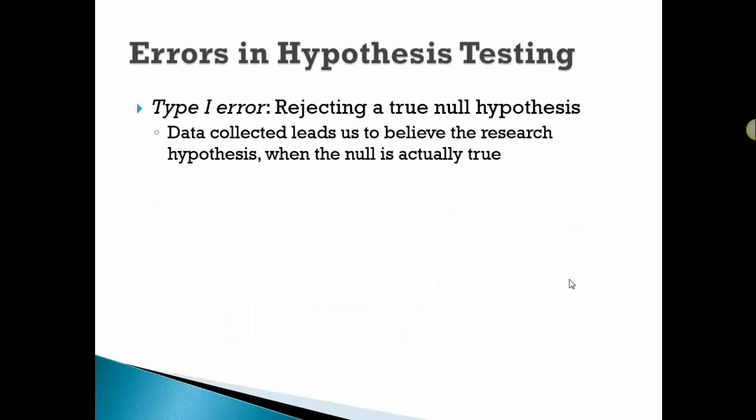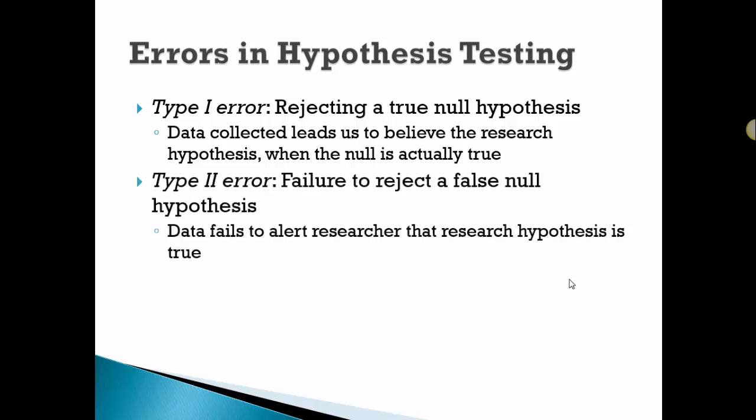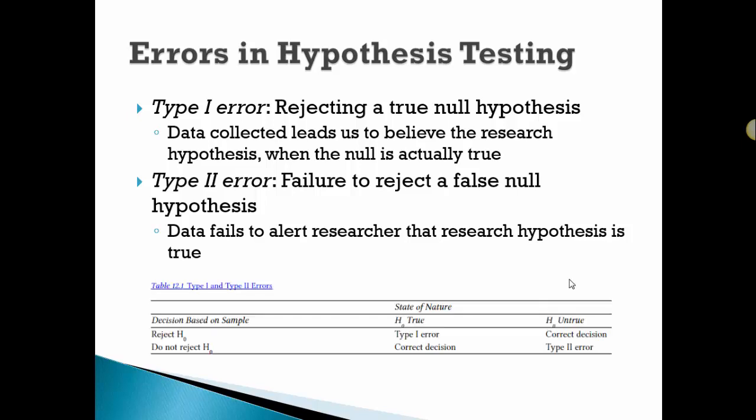When we do a hypothesis test, we can actually make a mistake, and we don't know that we've made that mistake, which is why it's critical to think about the effects of the mistakes. A Type I error is when we reject a true null. The data leads us to believe the research hypothesis when, in fact, the null is actually true. A Type II is failing to reject a false null. Data fails to alert the researcher that the research hypothesis is true. There's a little summary table from your book.